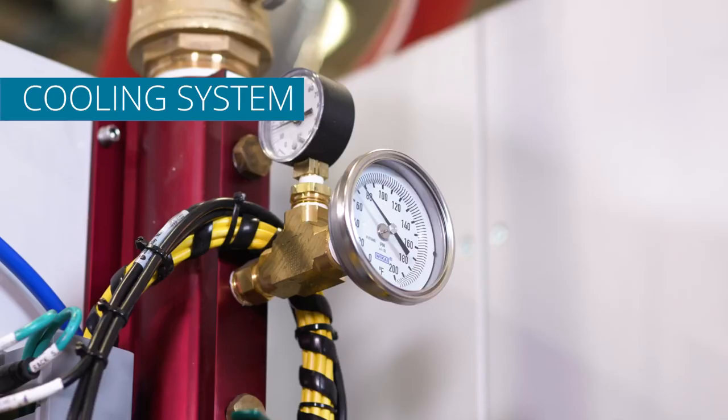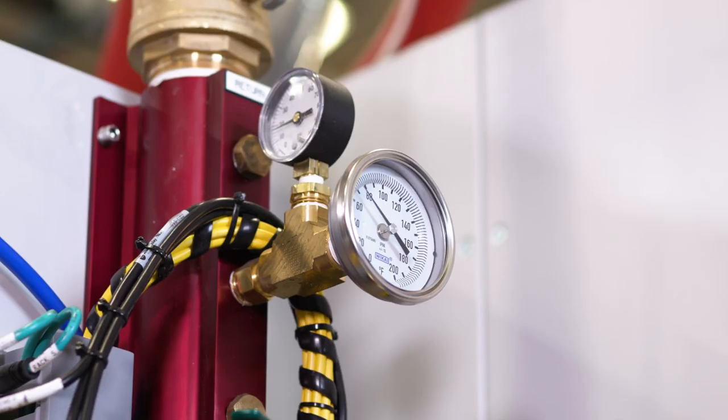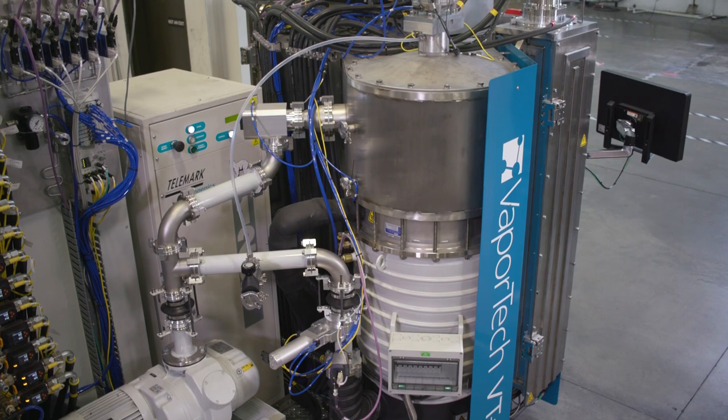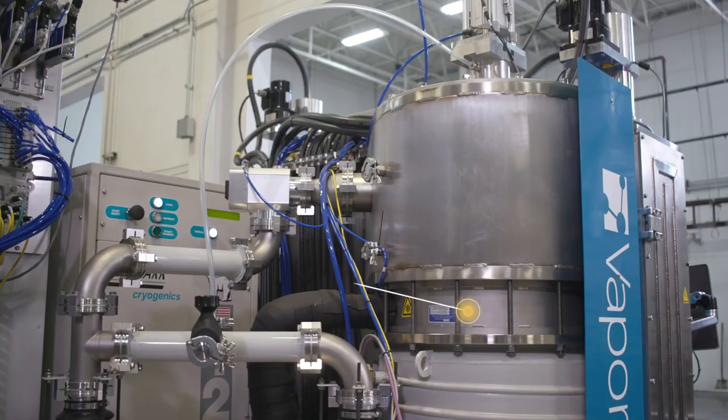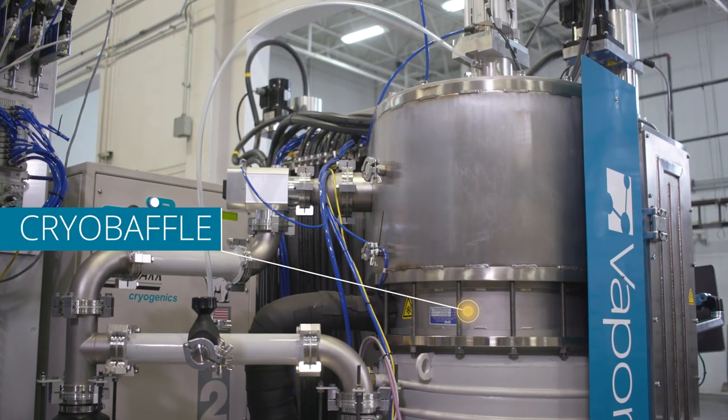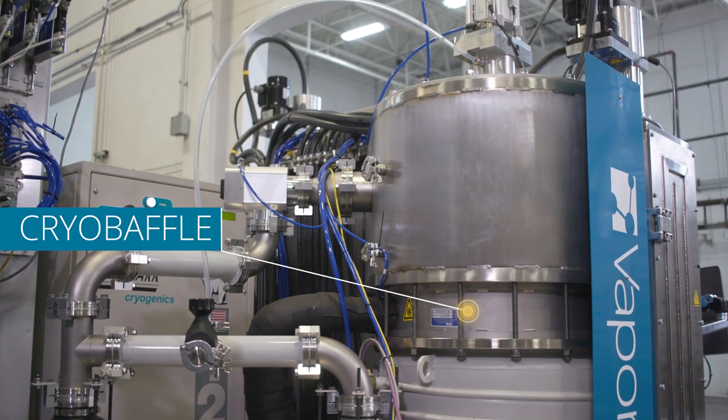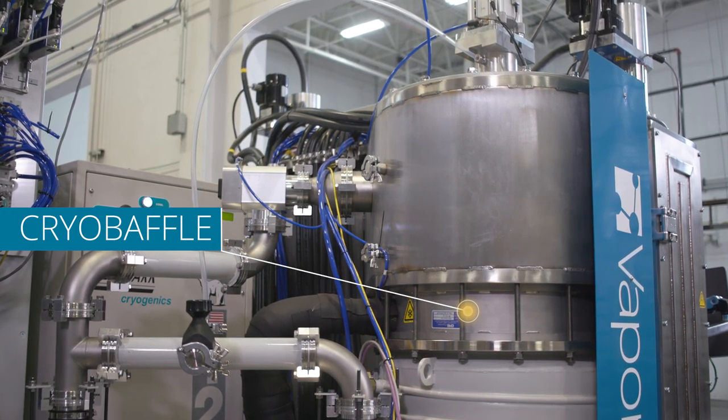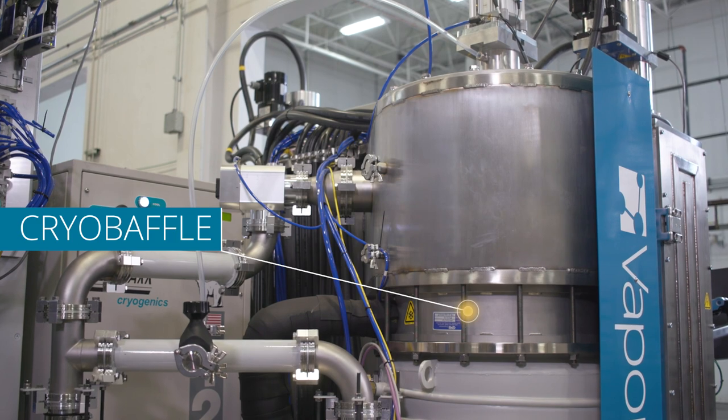Cooling water is supplied using a separate water chiller. Above the diffusion pump is a cryobaffle that is cooled to a very low temperature. This device reduces the time required to reach the desired vacuum pressure by helping the diffusion pump quickly remove trace water vapor from the chamber.